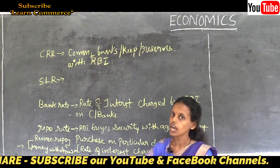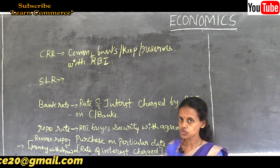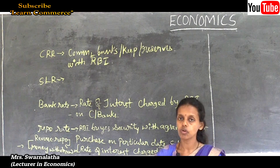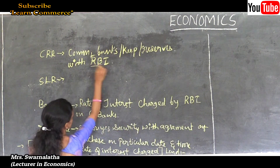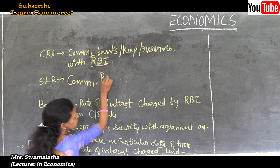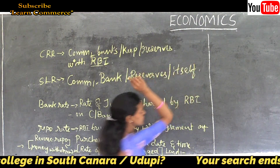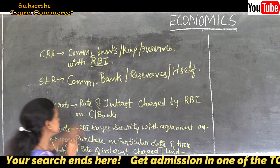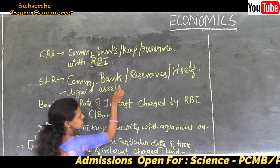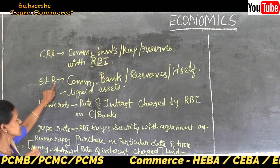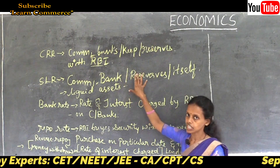SLR means commercial banks have to keep some amount of reserves with themselves. A bank should not give out all its money as loans to customers — it should keep a certain amount as a reserve. So commercial banks, not with RBI but with themselves, must keep certain liquid assets in the form of cash.